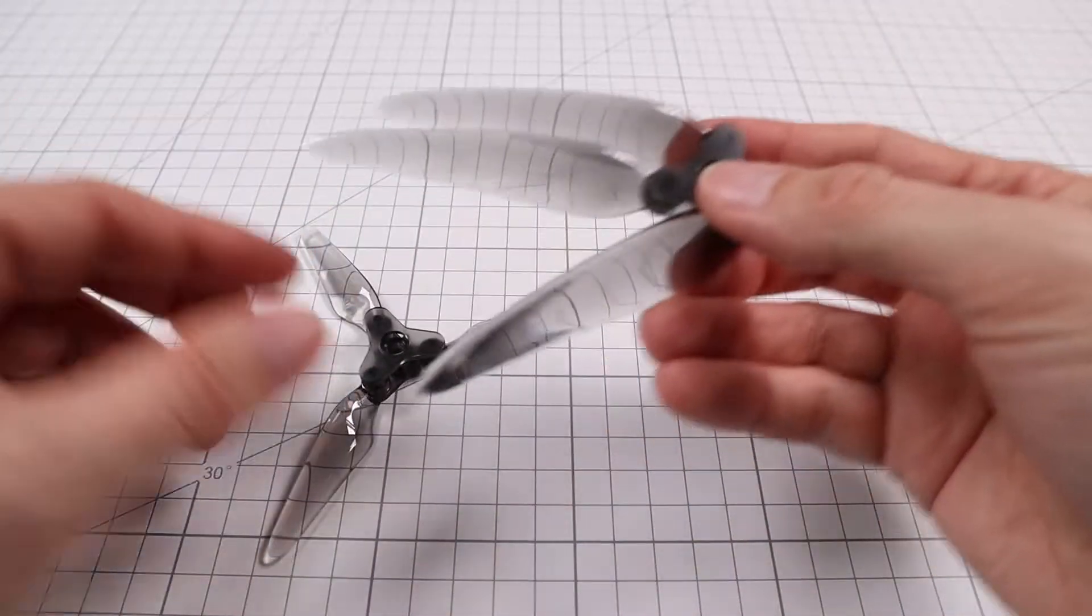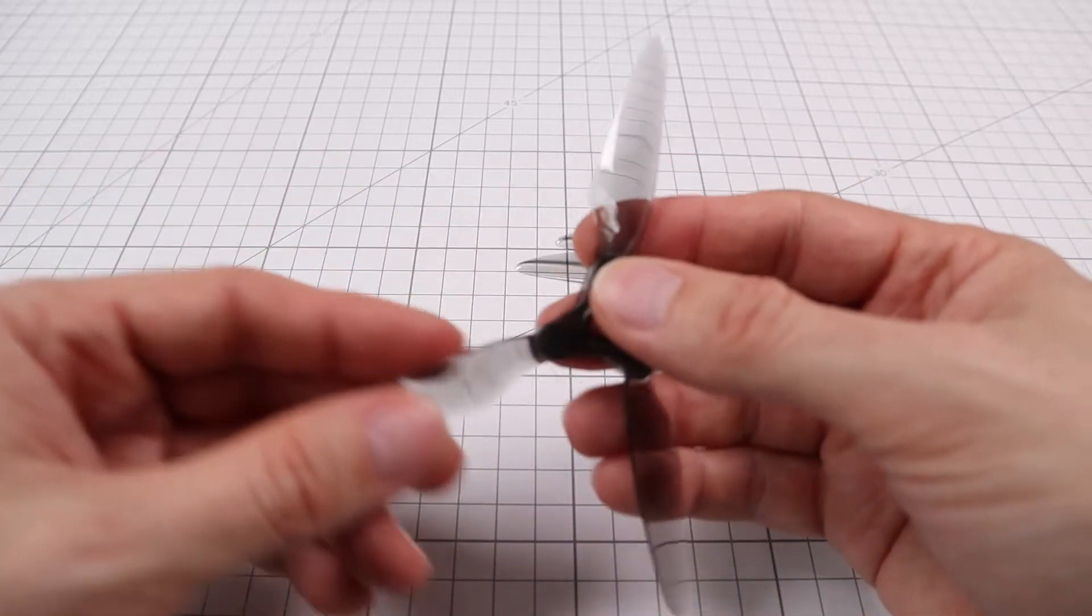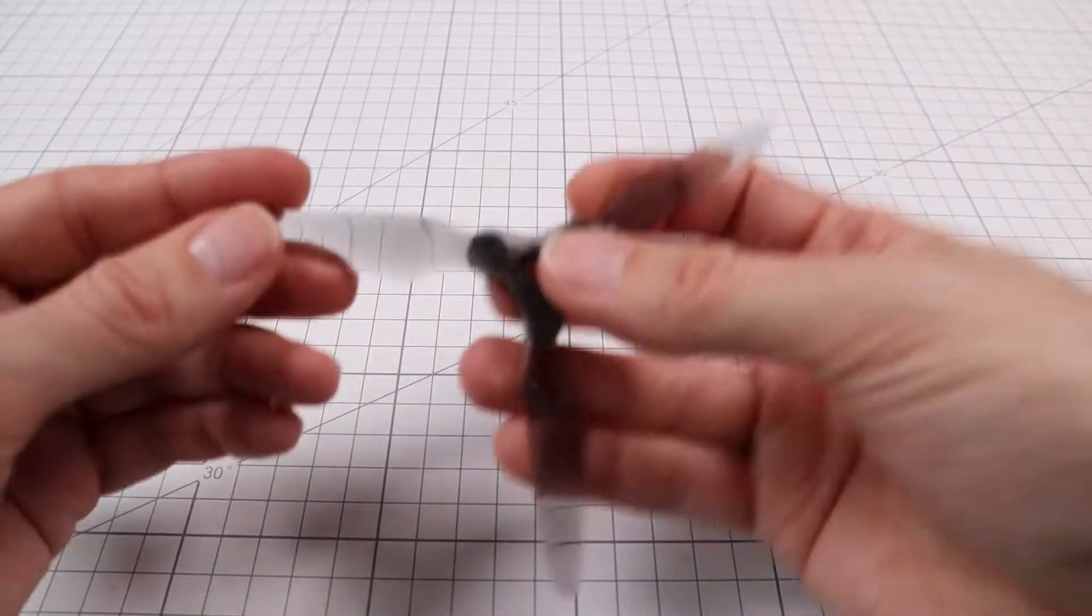Like this one, this is the 7-inch version and they come in all different sizes down to 3 inch, and this is the 5-inch version.